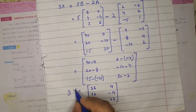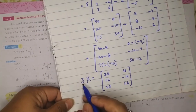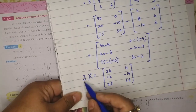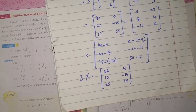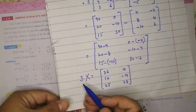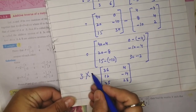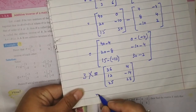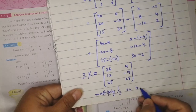This result is the value of 3X, but we need to find X. To eliminate the 3, we multiply both sides by 1/3. In an equation, whatever operation we perform on one side, we must perform the same on the other side to keep the equation balanced. So we multiply 1/3 on both sides.